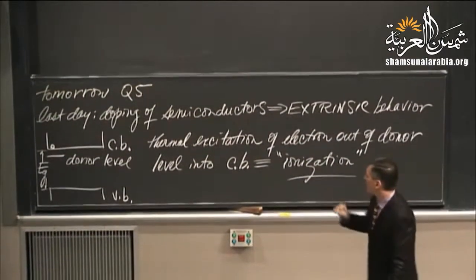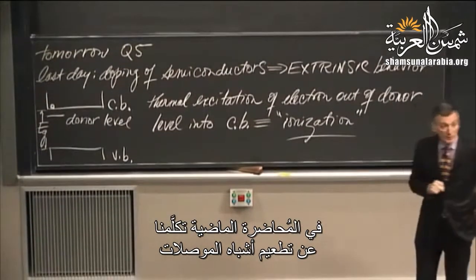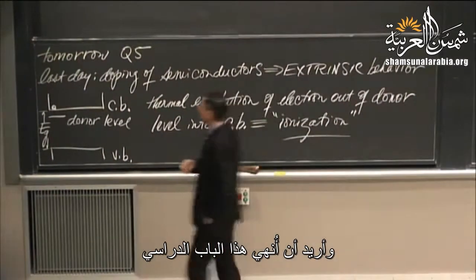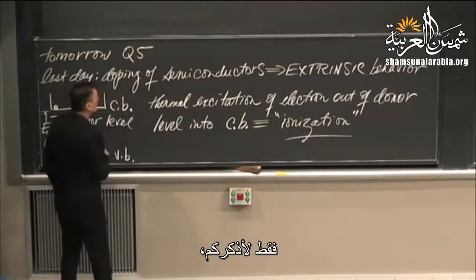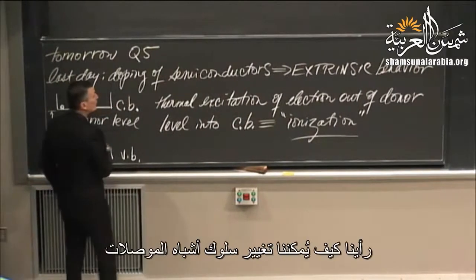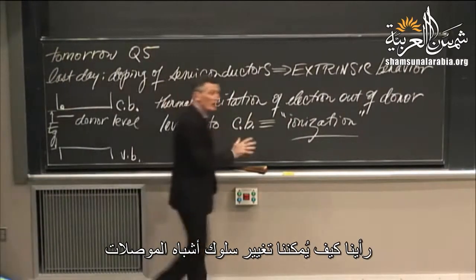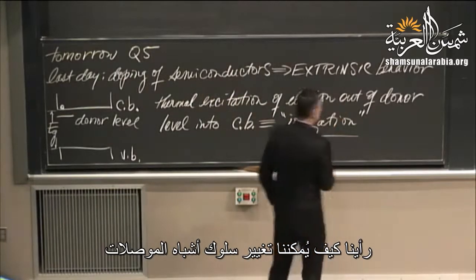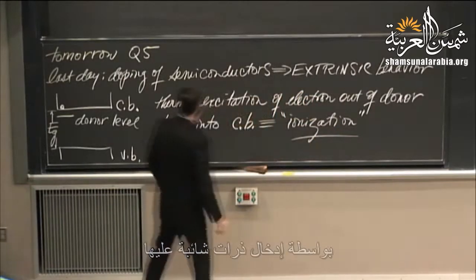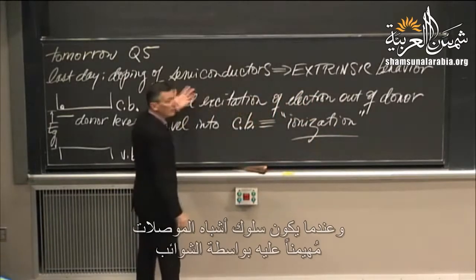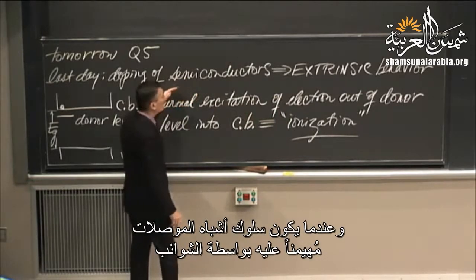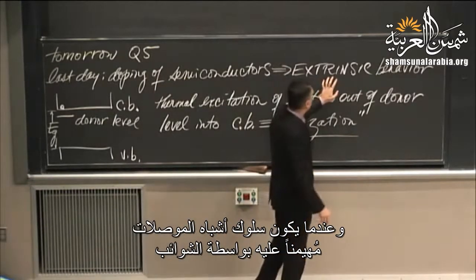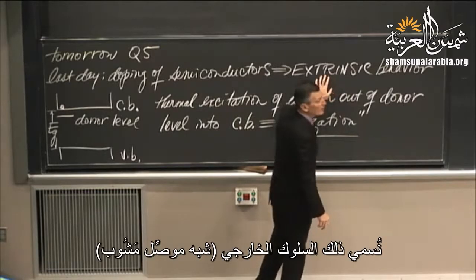Last day, we were talking about doping of semiconductors, and I want to finish up that unit. Just to refresh your memories, we looked at how we could change the behavior of the semiconductor by introducing impurity atoms. And when the behavior of the semiconductor is dominated by the impurity atoms, we term that behavior extrinsic.